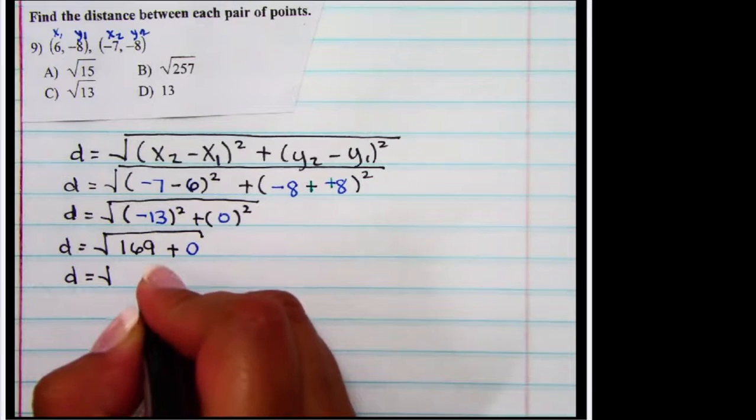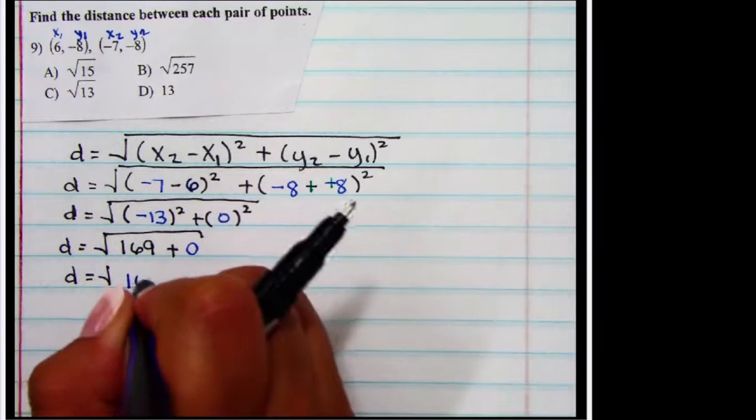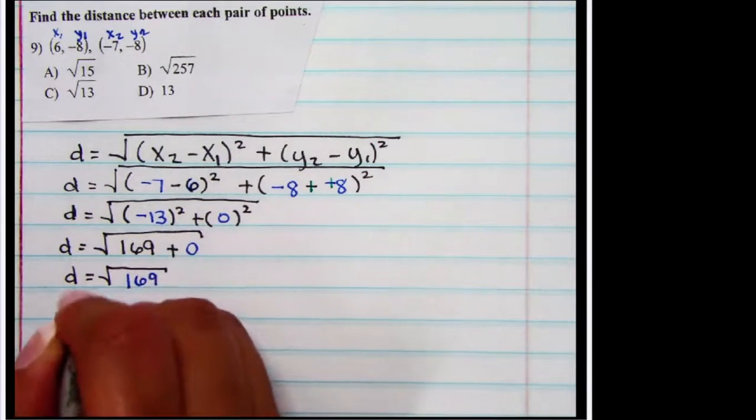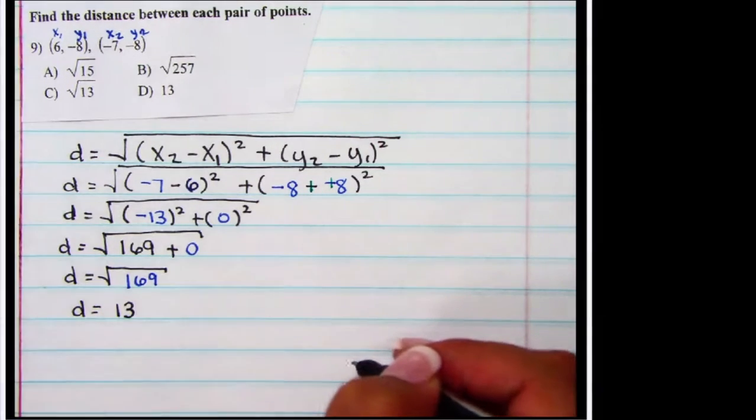My next simplification has me doing 169 plus 0. 169 plus 0 is 169. And the square root of 169, according to my handy calculator, is 13.